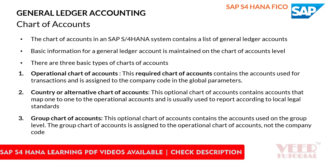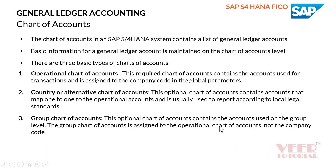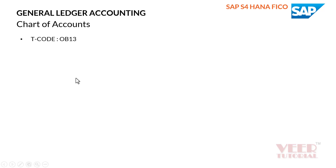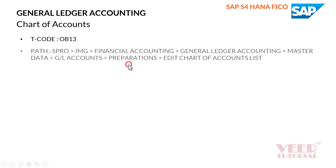The third type is the group chart of accounts, which is also optional. In our example, we have a group company with two company codes, and we want to perform consolidation. We can create one group chart of accounts and map it to the operational chart of accounts. The T-code we can use is OB13, and we will now open the SAP screen.